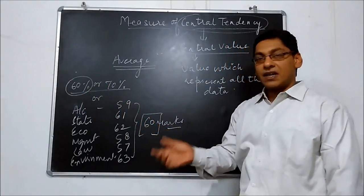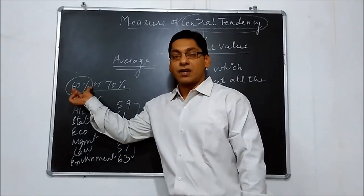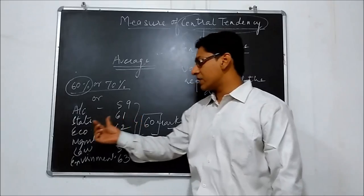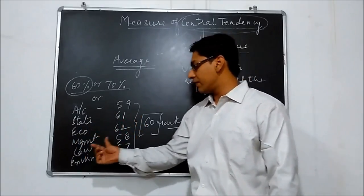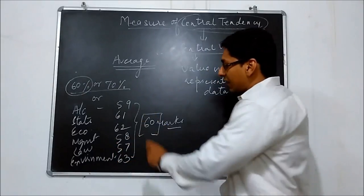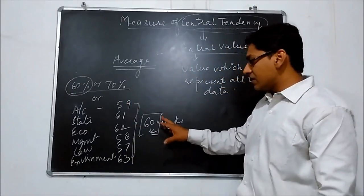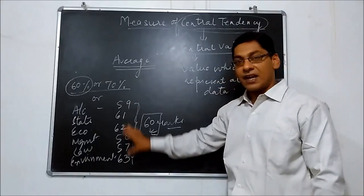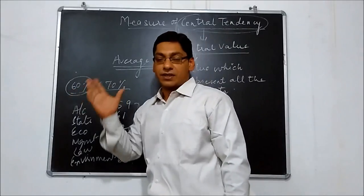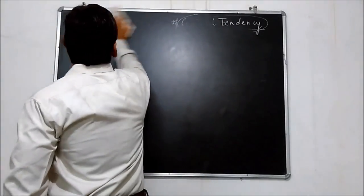If you ask how many marks in the last class, what do you say? 60%. Now, if you ask individually: Accounts 59%, Statistics 61%, Economics 62%, Management 58%, Law 57%, Environment 63%. When we look at all these data, all these data lie around 60%, and the average of all these data is 60%. In Central Tendency, we just calculate averages.